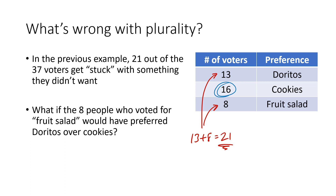Another way to think about this: the 8 people who voted for fruit salad might have thought strategically. If they know fruit salad isn't a popular choice, and they like Doritos second best, maybe they should strategically vote for Doritos instead — so at least they don't get stuck with something they really don't want. That's the kind of thinking that comes up when you're trying to get your second choice instead of your last choice.